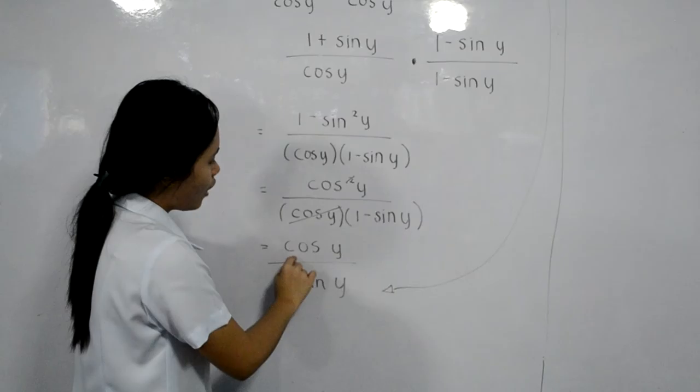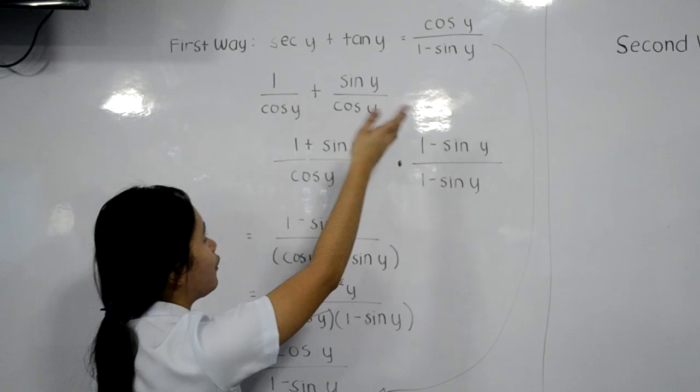Then we can rewrite 1 minus sine y. That is equal to cosine y over 1 minus sine y.